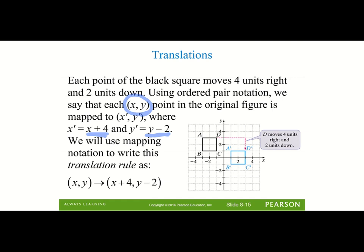You can see the original figure A, B, C, D. If we look at point D, the point moved to the right four places, so we added four to x to show the translation. It also moved down two, so we did y minus two to show the rule for all points in the translation.